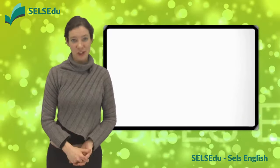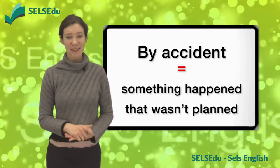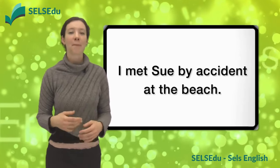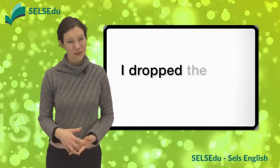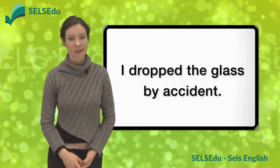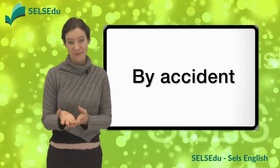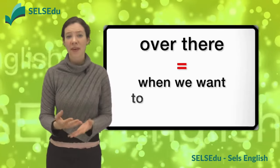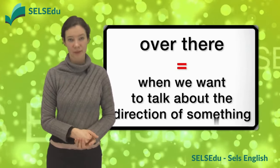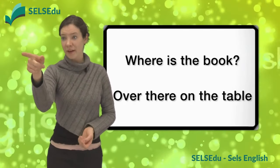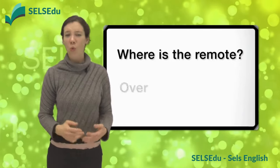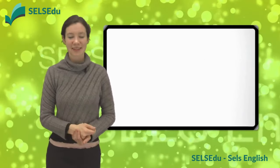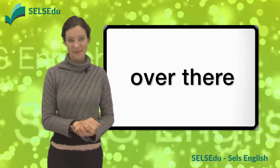Let's look at some of the useful expressions from today's dialogue. By accident means that something happened that wasn't planned. I met Sue by accident at the beach. I dropped the glass by accident. You say it: by accident. Very good.